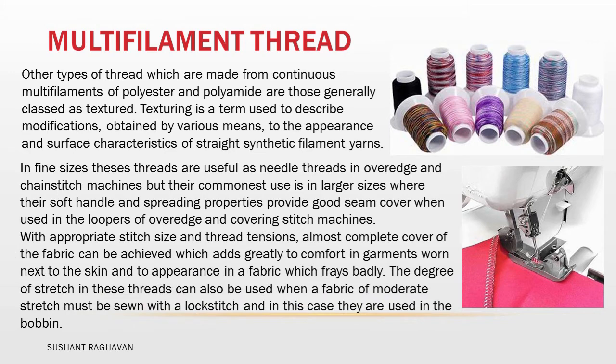Their commonest use is in larger sizes where their soft handle and spreading properties provide good seam cover when used in the loopers of overedge and cover stitch machines. With appropriate stitch size and thread tensions, almost complete cover of the fabric can be achieved, which adds greatly to comfort in garments worn next to the skin. The degree of stretch in these threads can also be used when a fabric of moderate stretch must be sewn with a lock stitch, and in this case they are used in the bobbin.